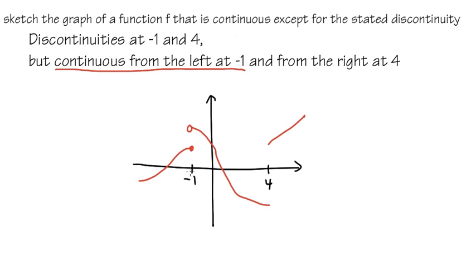On the other hand, I want the graph to be continuous from the right at 4. So I look at the right piece of the graph, I will fill in this endpoint with a closed circle. So that means from the left graph right here, I will just do an open circle.